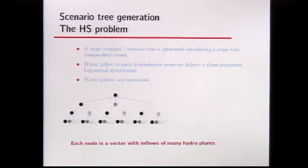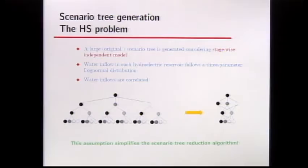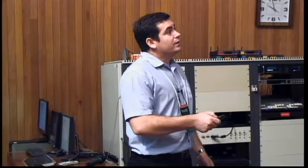The scenario tree is generated assuming a stagewise independent model: water inflow in each hydro plant follows a three-parameter log-normal distribution, and inflows are correlated, so each node is a vector of values for different hydro plants. The stagewise independent assumption simplifies the scenario tree reduction algorithm by reducing the number of node comparisons, making the algorithm very efficient in this case.